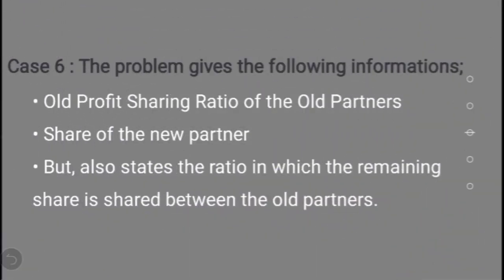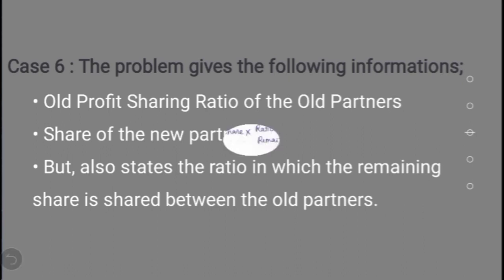In Case 6, the problem gives three informations: old profit sharing ratio, share of the new partner, and the ratio in which the remaining share is shared between the old partners. Case 6 calculation is similar to Cases 1 and 2 — but instead of assuming the old profit sharing ratio for sharing the remaining share, a specific ratio is given in the question for how the old partners share the remaining share.